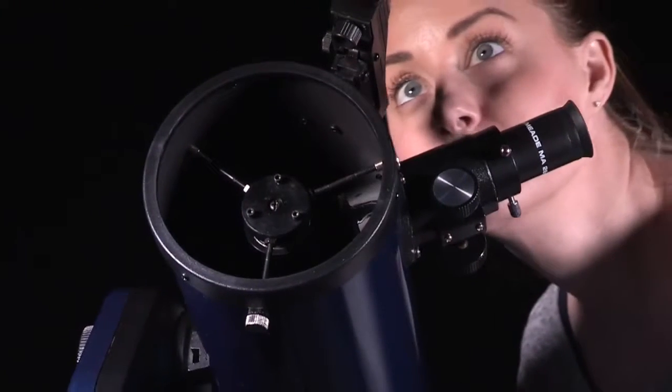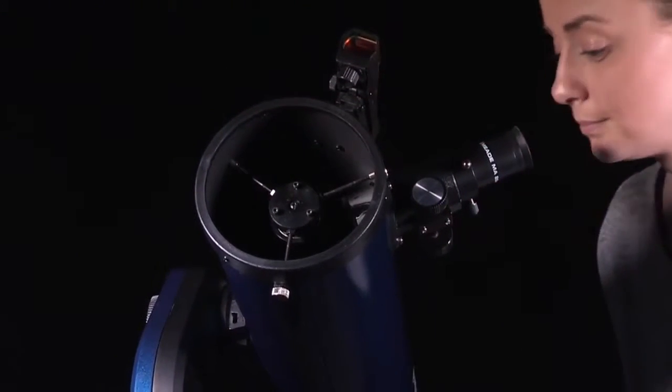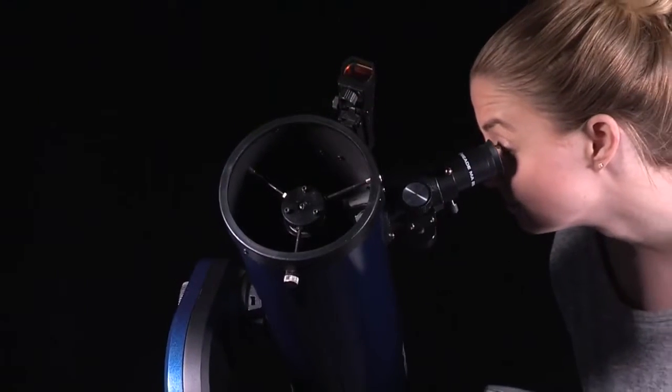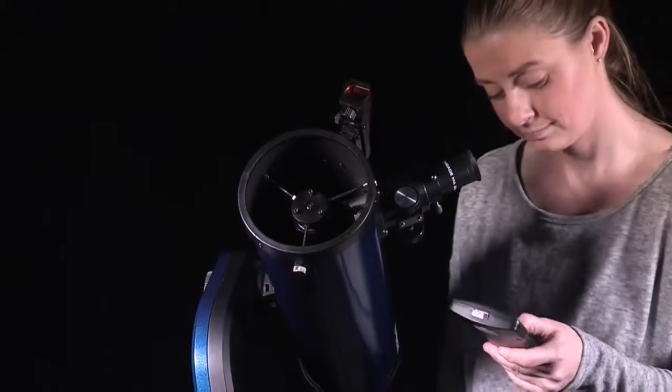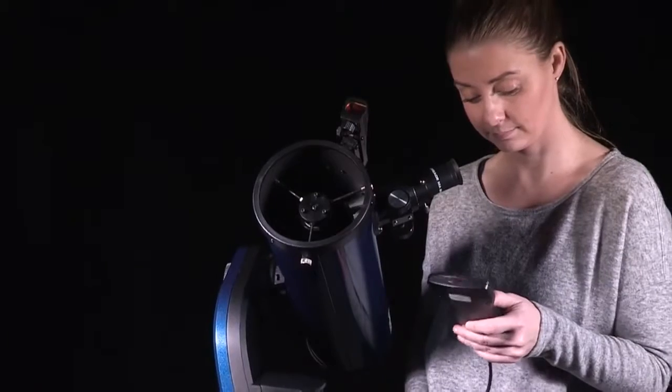While looking through the red dot finder, use the arrow keys to move the telescope to place the red dot on top of the brightest nearby star. Now look through the eyepiece and use the arrow keys to move the star to the center of the eyepiece field. Press enter.